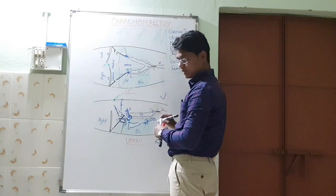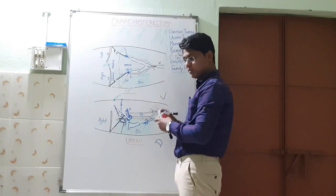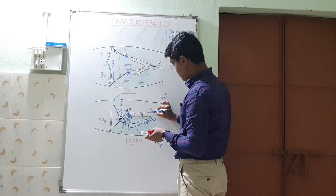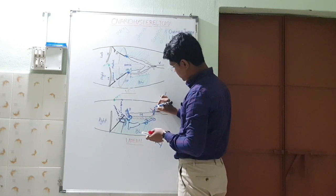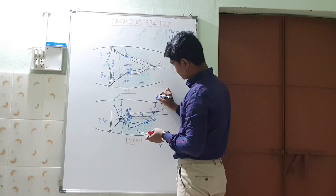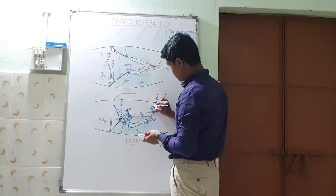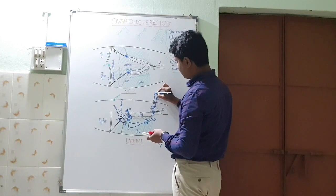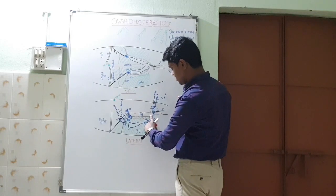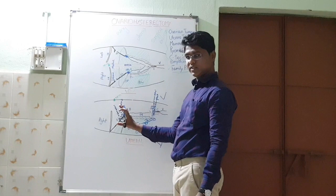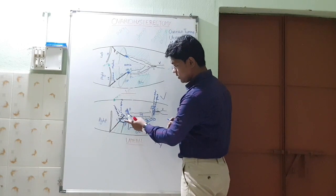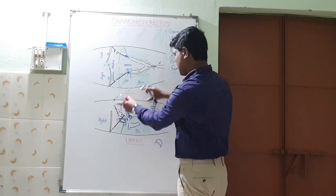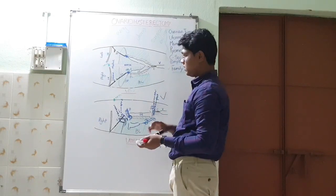Now you have to ligate the uterine body. Always ligate the uterine body as close as possible to the cervix, because if you leave some uterine body it may result in stump pyometra. Put two ligations close to the cervix, 0.5 mm apart. Place a hemostat here between the last ligation and the cut — keep some distance apart. Simply cut with a BP blade or scissors. Now the whole system has been isolated and can be taken out.